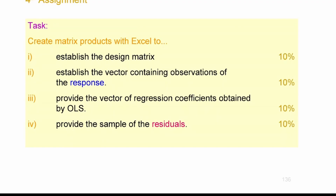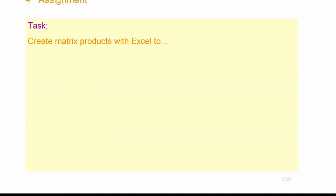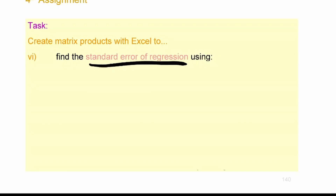I want a sample of the residuals, because you need to calculate the sum of the squared residuals. If you have the residuals, square them and sum them up. After that, find the standard error of the regression. The standard error of regression is the square root of the residual sum of squares divided by the degrees of freedom: sqrt(RSS / (N - K)).